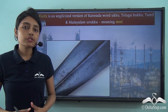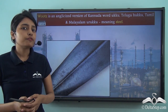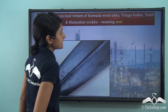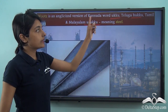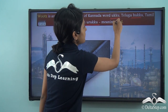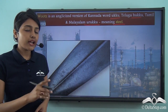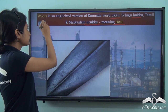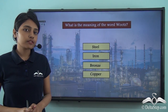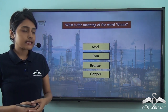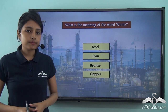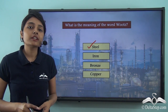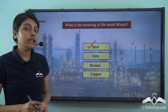Many of you might be wondering about the terminology of the word 'wootz'. Wootz is an anglicised version of the Kannada word 'ukko', the Telugu word 'hukko', and the Tamil and Malayalam word 'udukku'. All these words mean the same thing — steel. So wootz steel is a particular kind of high carbon steel, as we just mentioned, which was produced in the Indian subcontinent through many centuries. The word wootz means steel — not iron, bronze, or copper.